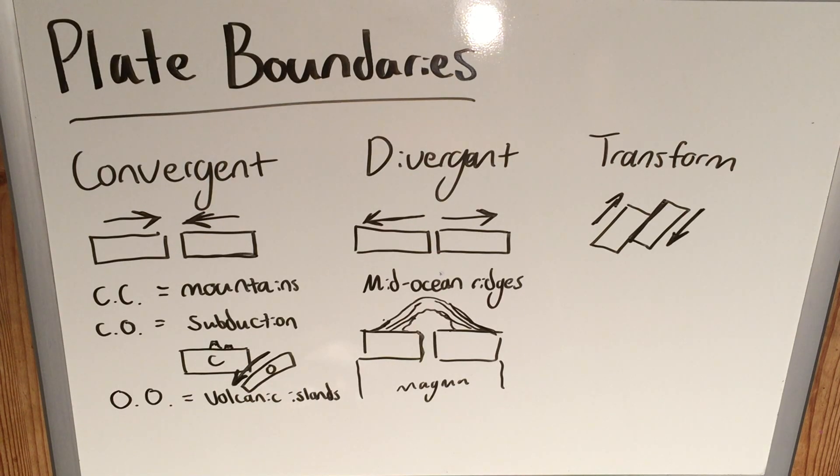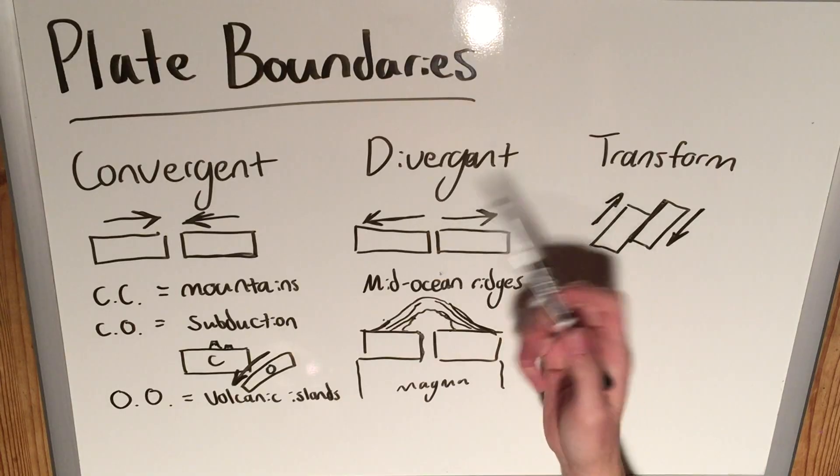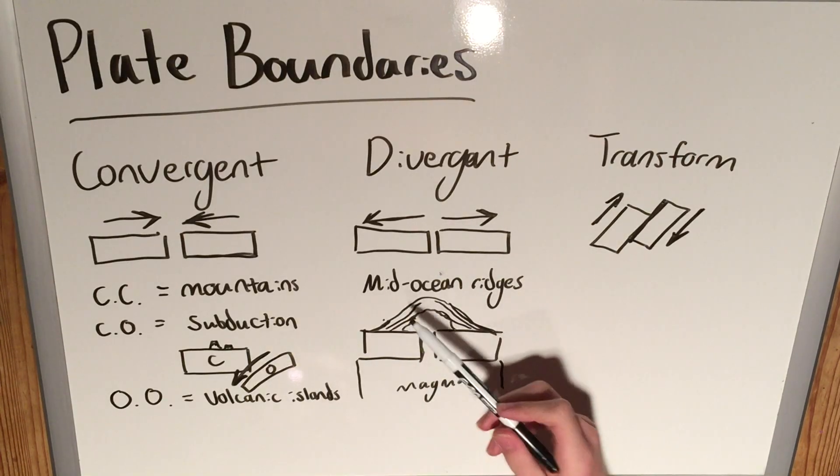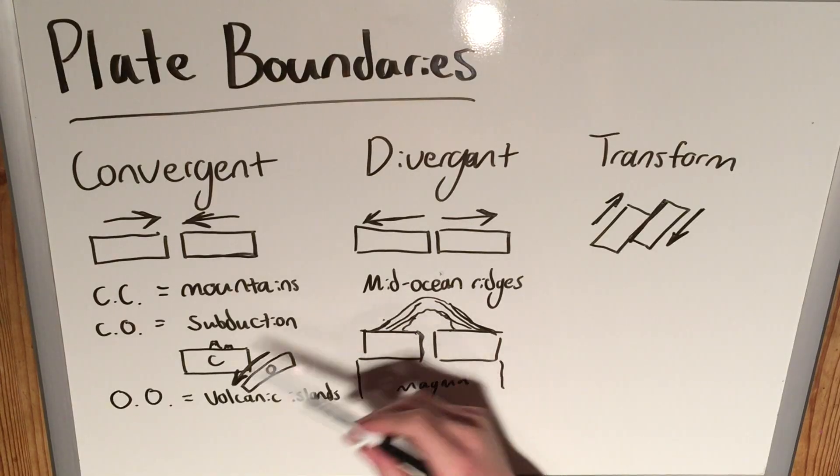So that's what divergent plate boundaries are really notable for. And then finally transform, also sometimes called conservative plate boundaries, because no continent or no crust is created or destroyed. That's right, divergent are also sometimes called constructive because you get the formation of new rock which becomes part of the crust here.